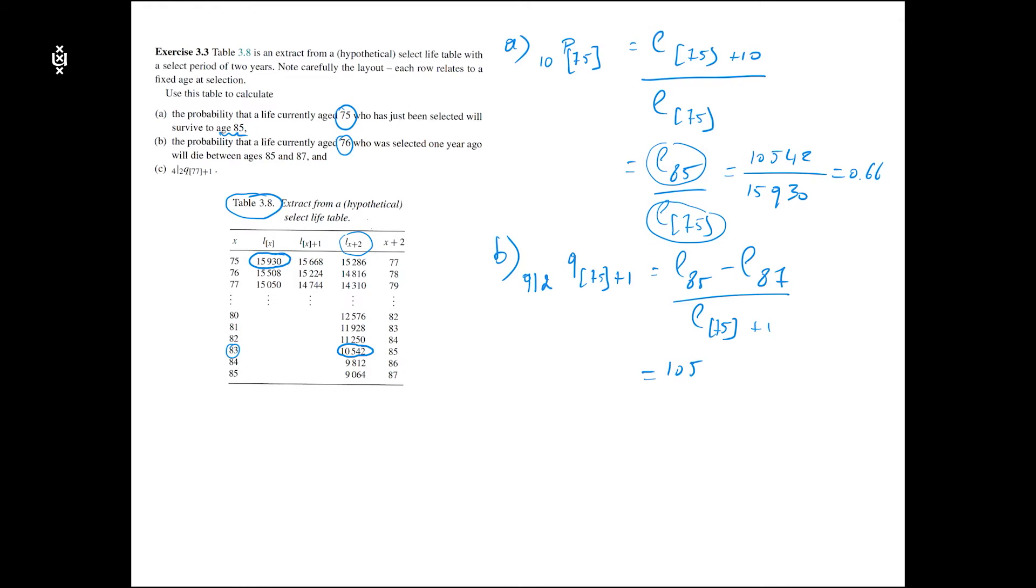If you now look in the table, L85 you already got that number, it's 10,542. L87 is this one here, it's 9,064, divided by L75 plus 1, which is 15,668. If you calculate you get 0.094 as your probability.